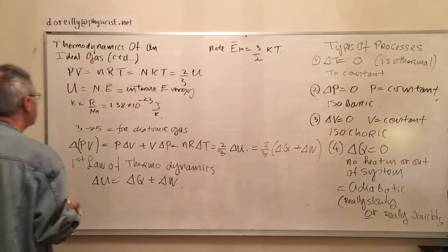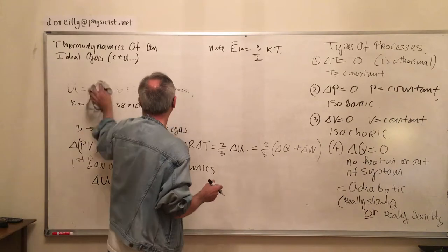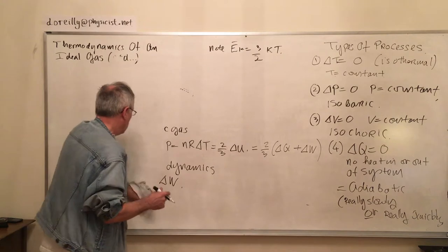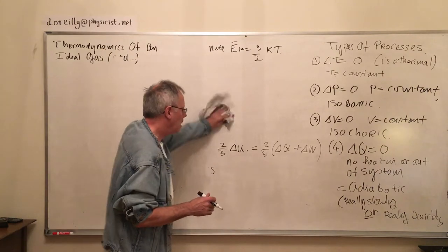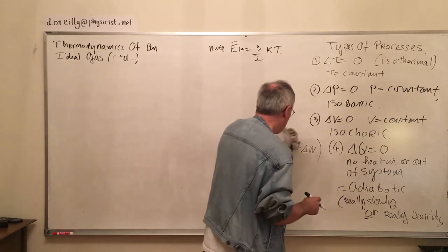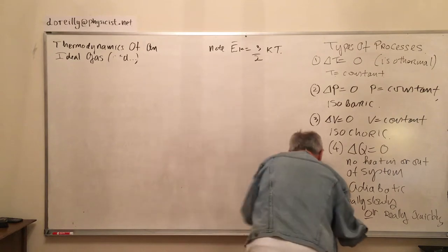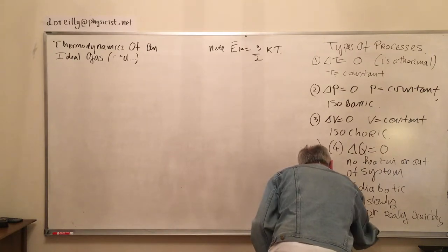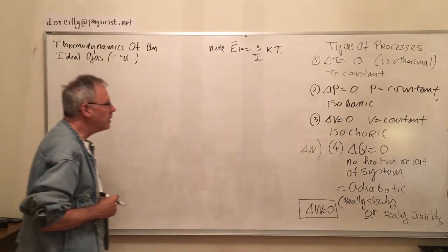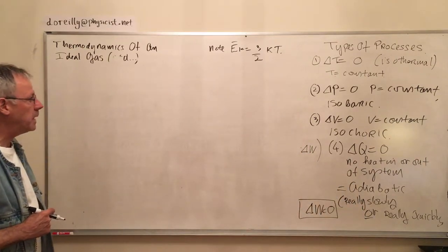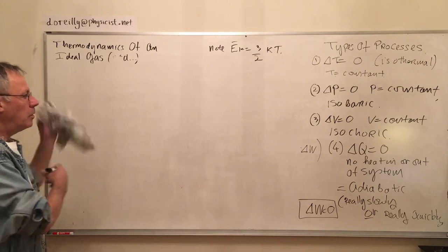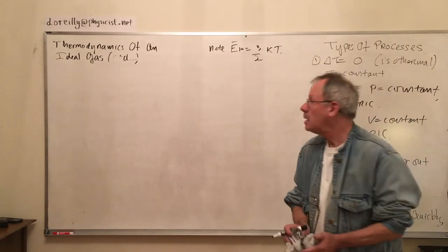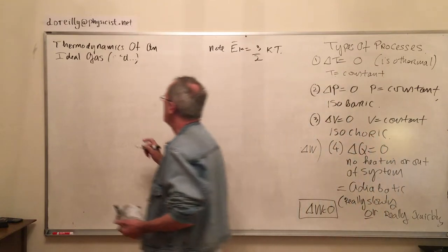So they're the different kinds of thermodynamic processes, and we look at them individually. Before we do anything, we'll look at delta W. I'm not sure what delta W equals zero will turn out to be, but it's possible that there is such a thing. We'll see where we end up. So let's look at work done on a gas.